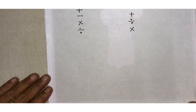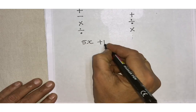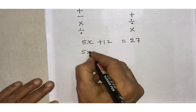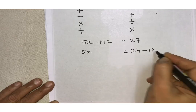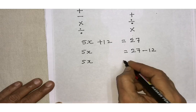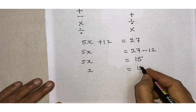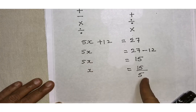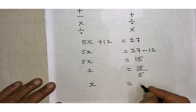Let us understand this by one example: 5x plus 12 equals 27. The plus 12 moves to the right side and becomes minus 12, so 5x equals 27 minus 12, which gives 5x equals 15. Since 5 is in multiplication form, it moves to the right as division: x equals 15 upon 5, so x equals 3.